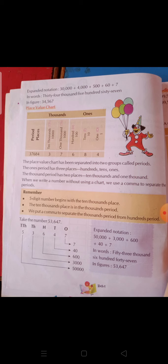The ones period has three places: ones, tens, and hundreds. The thousands period has two places: one thousand and ten thousand. In the thousands period there are two places — ten thousand and one thousand.